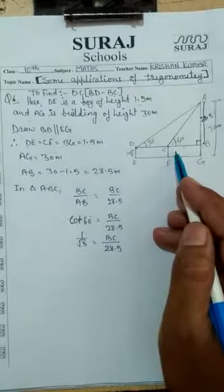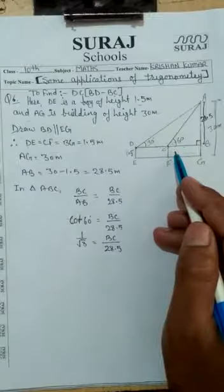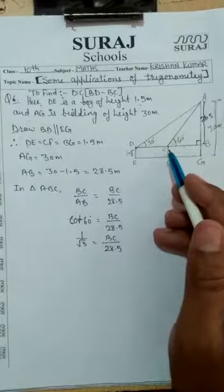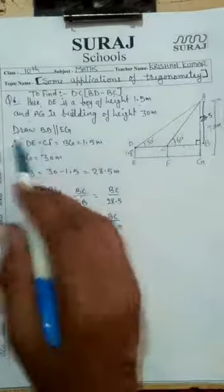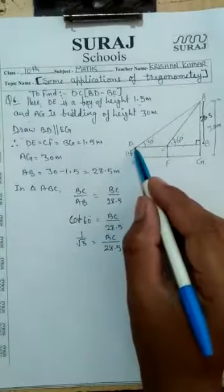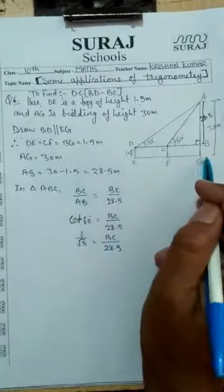We need to find the distance he walks towards the building. We have drawn a line from the boy's eye level that is parallel to the ground. B is parallel to EG.